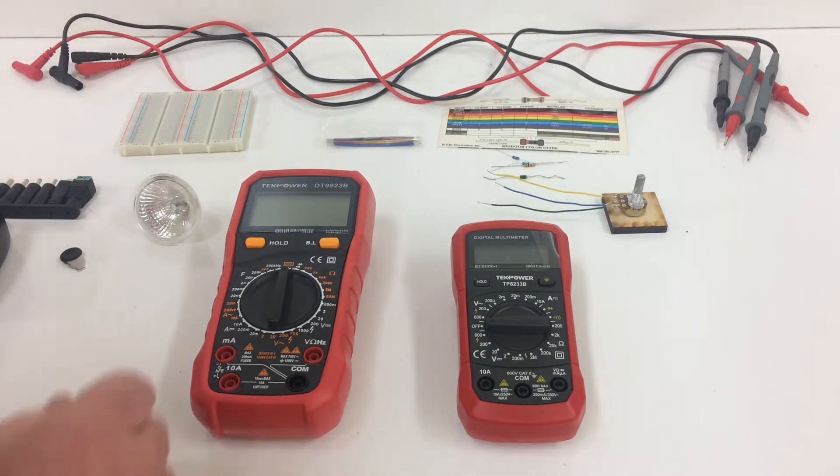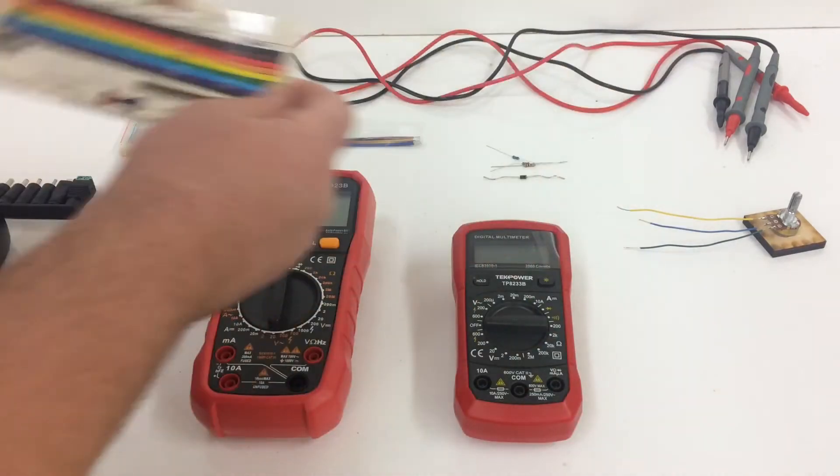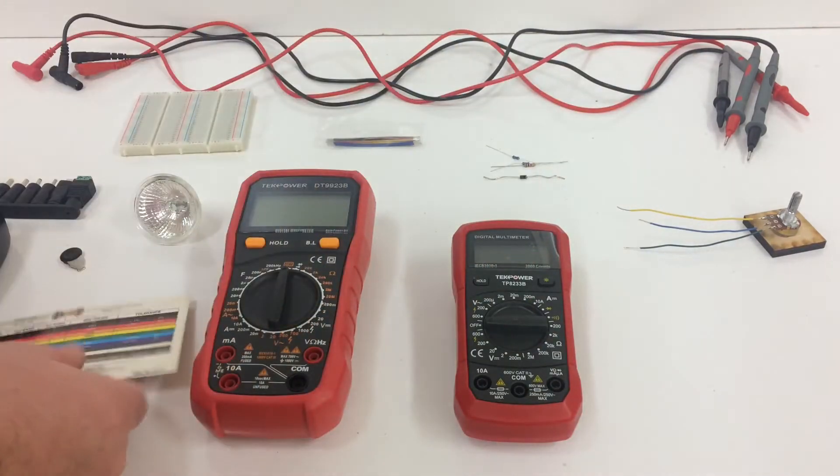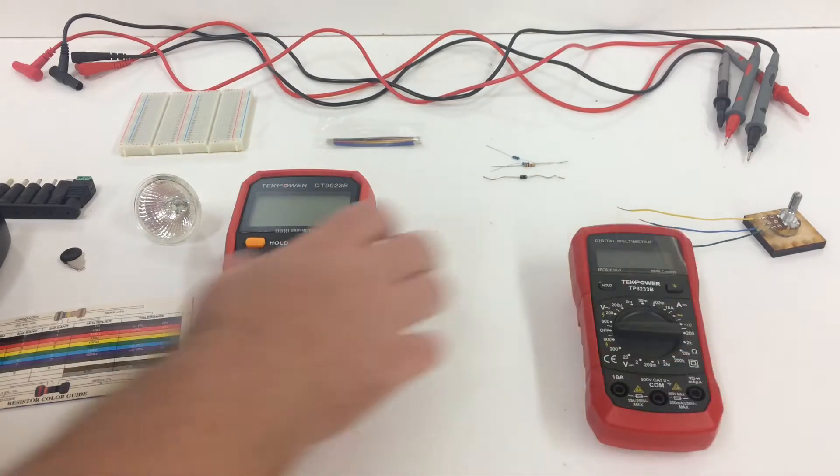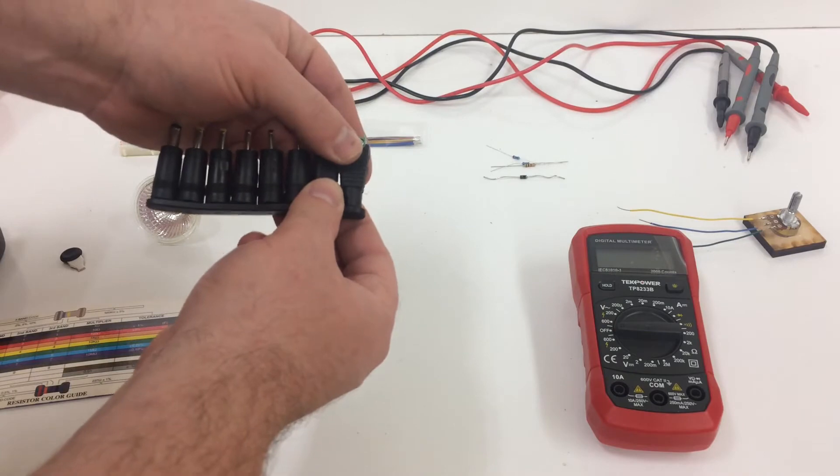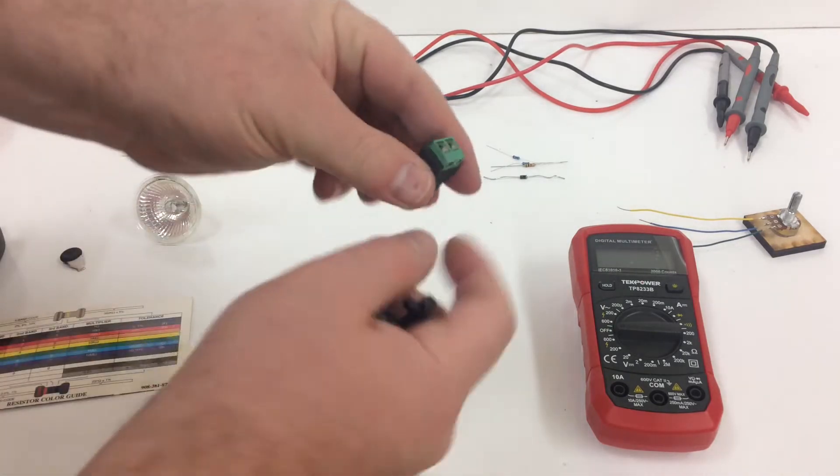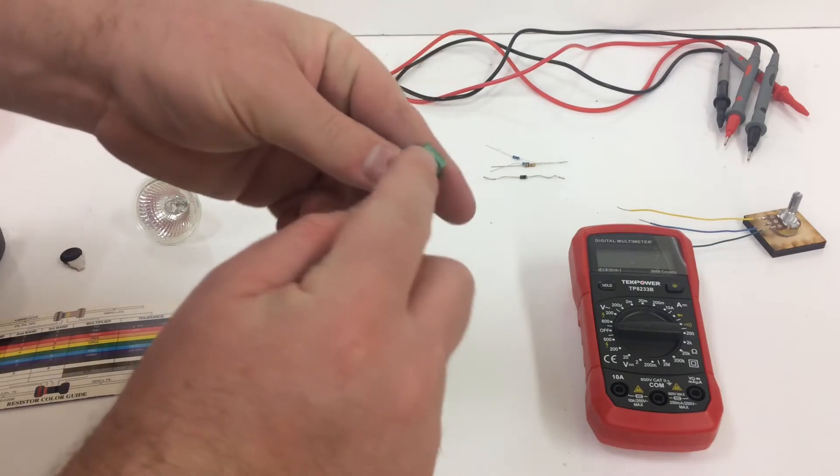So for part one we'll set a few of these things aside. Use your resistor color guide to pick the appropriate resistor. And then we need to make our power supply. To do that we'll use the end that has two screw terminals.